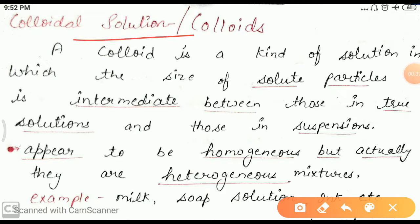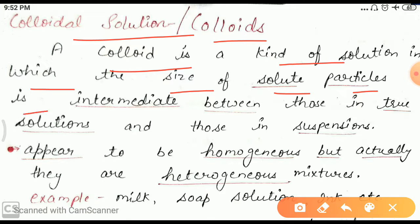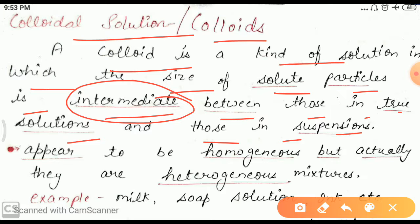A colloidal solution, or colloid, is a kind of solution in which the size of solute particles is intermediate between those in a true solution and those in a suspension. This means the size of the solute particles in a colloidal solution is bigger than the particles of the true solution, but smaller than the particles of the suspension.